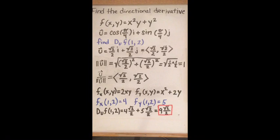Next, we need to find the partial derivatives of f with respect to x and with respect to y. The partial with x is 2xy, because when we find the partial with respect to x, y is held as a constant. For f with respect to y, we hold x as a constant and get x squared plus 2y. At the point (1, 2), the partial with respect to x turns out to be 4, and f with respect to y turns out to be 5.